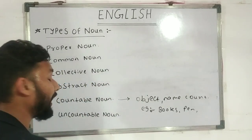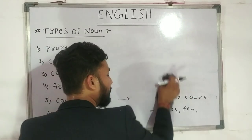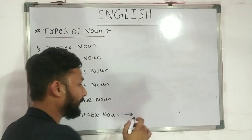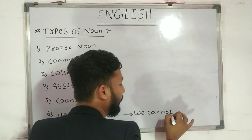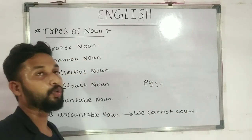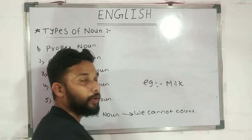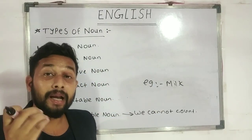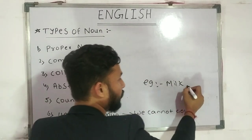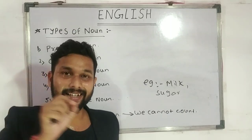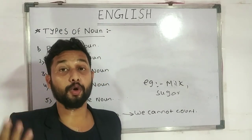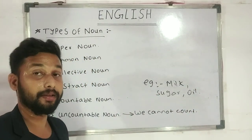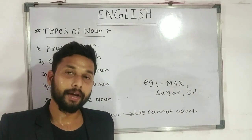Last but not least, our last type of noun is uncountable noun. This means nouns which we cannot count. For example, milk — milk is a noun, but it is an uncountable noun. You cannot count individual particles of milk. Similarly, sugar — you can say 1 kg of sugar, but you cannot count the individual particles, as there are millions of them. So milk, sugar, and oil are examples of uncountable nouns, which we cannot count.